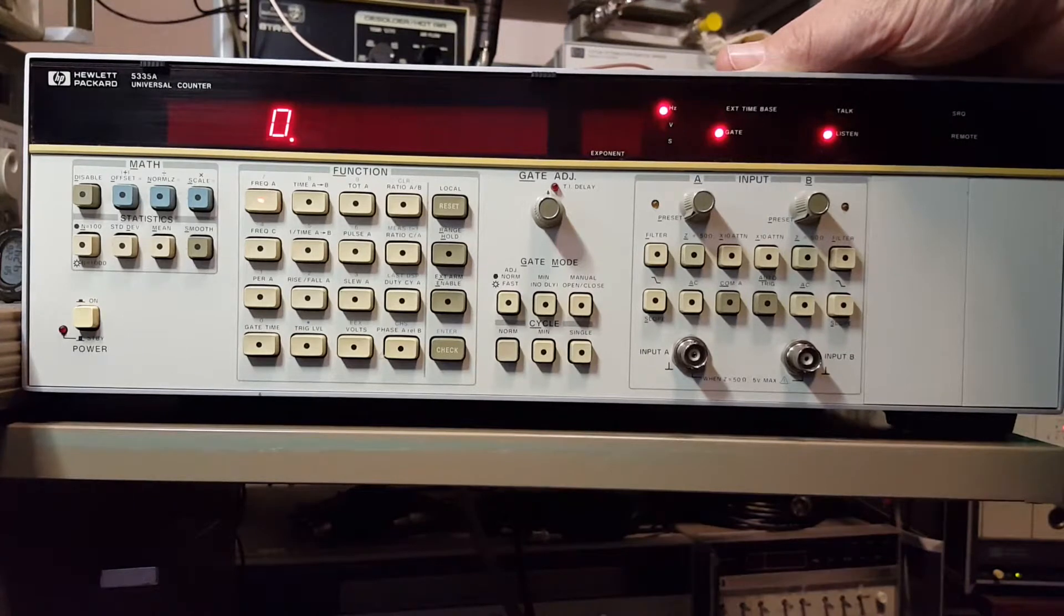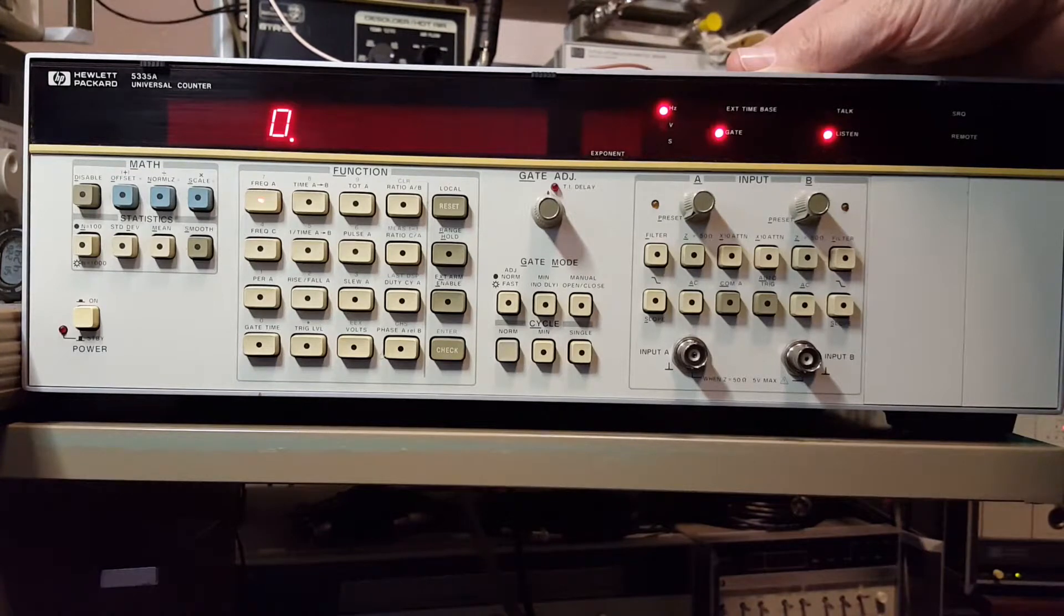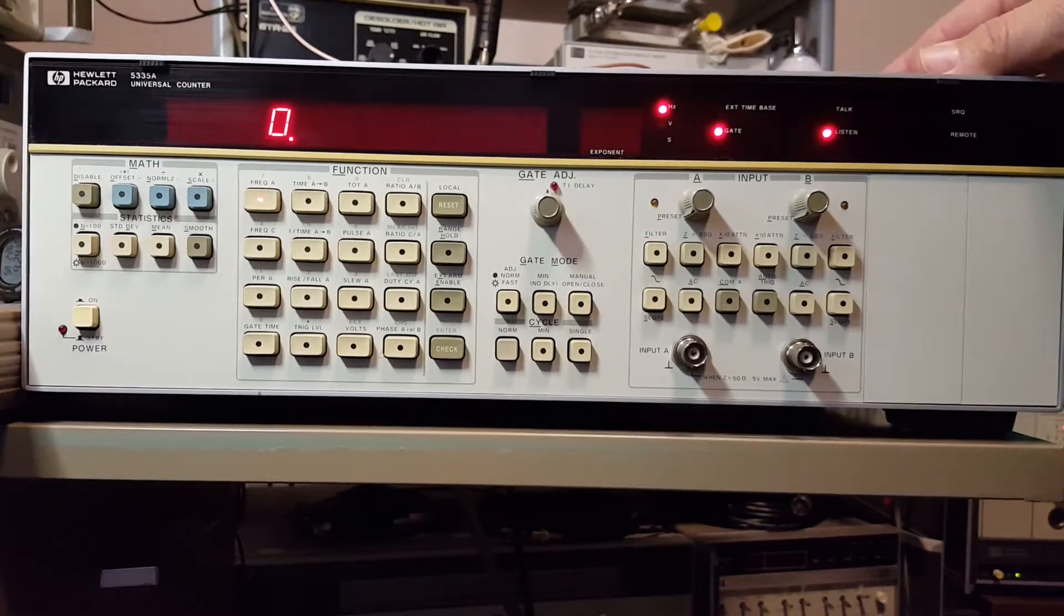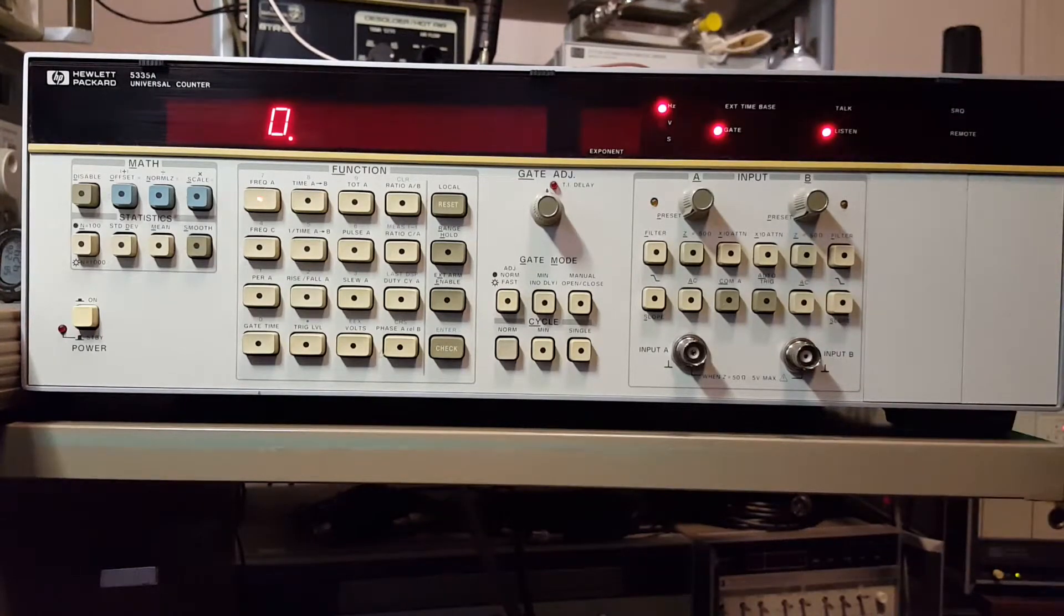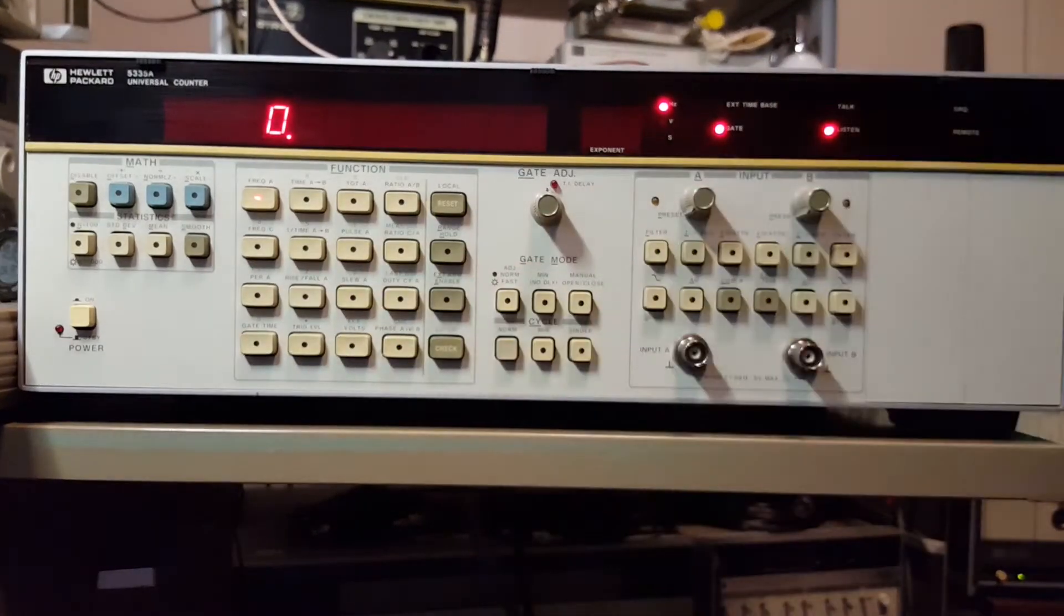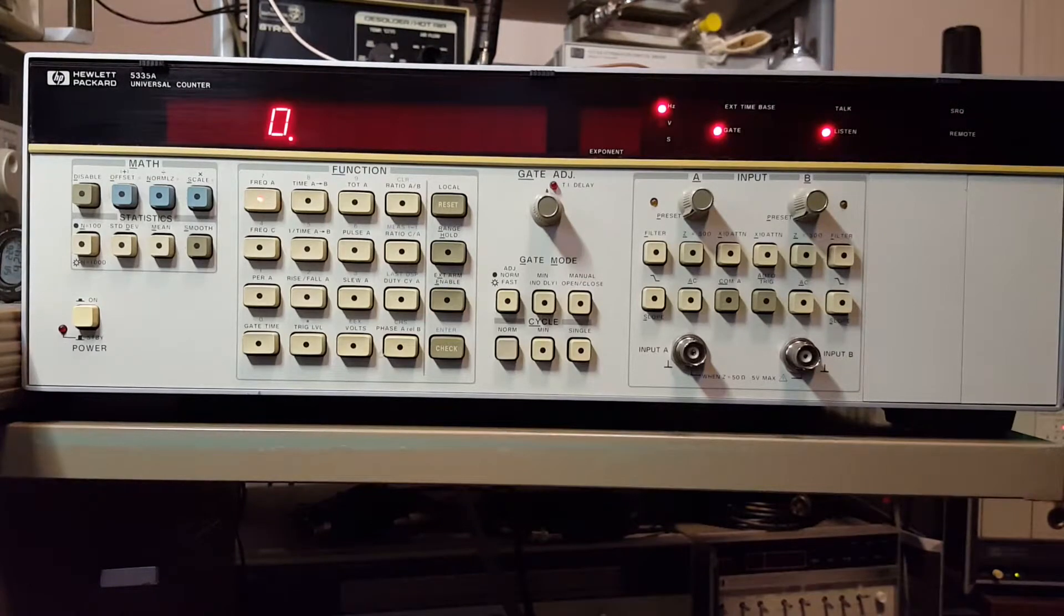And what this is, it's an HP 5335A universal counter. It's good up to 200 MHz on channel A, good up to 100 MHz on the B channel. It's got a whole lot of functions that my other counter doesn't have.